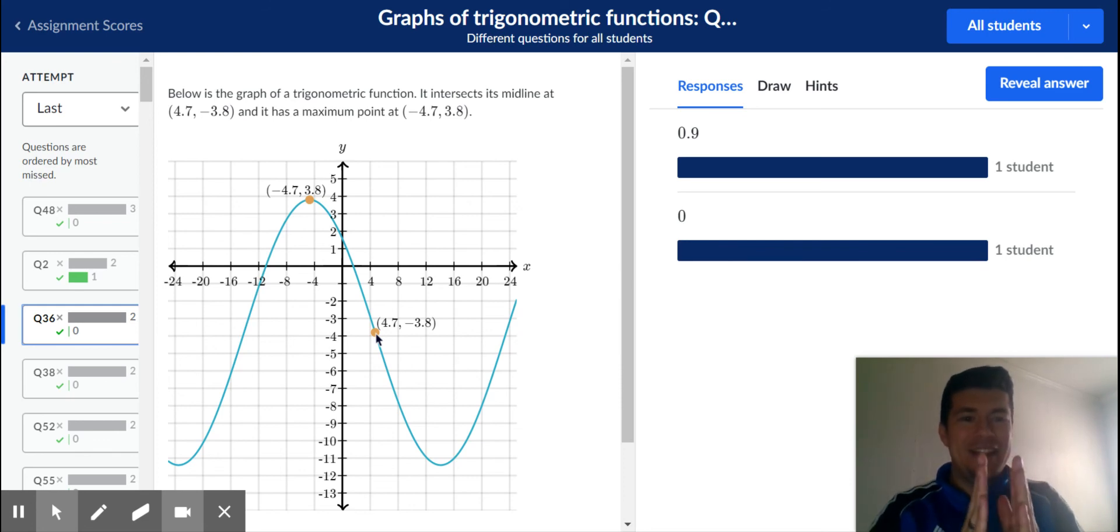Again, a period is a length. How long is it from point A all the way to point B? That is a period. Hope that this helps, guys. Good luck.